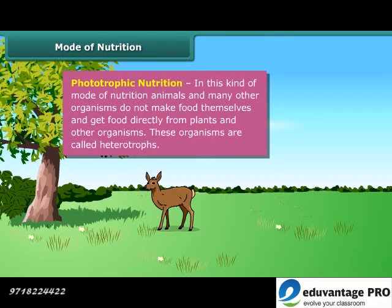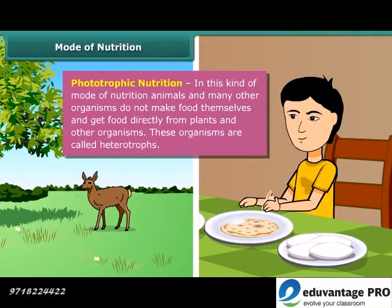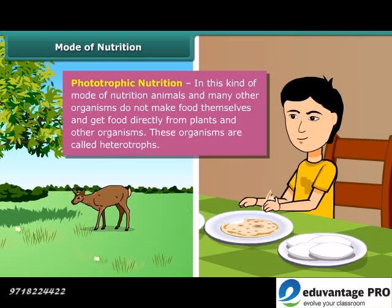The mode of nutrition in which animals and many other organisms take in ready-made food prepared by the plants is called heterotrophic nutrition, and these organisms are called heterotrophs. Human, lion, tiger, etc. are examples of heterotrophs.